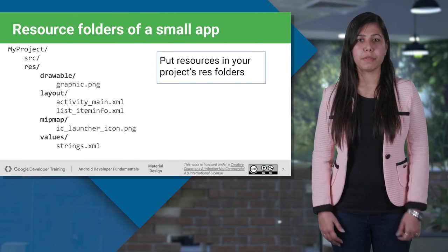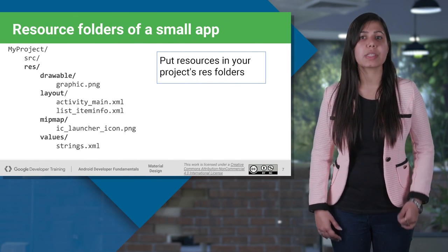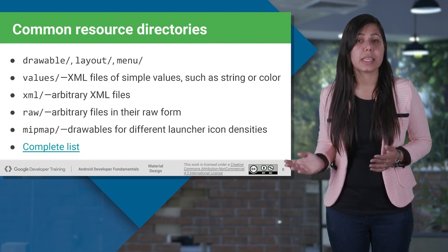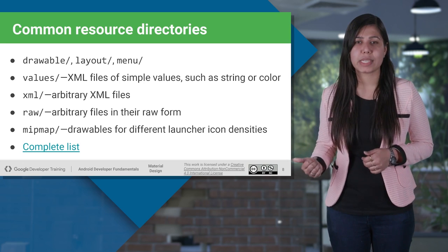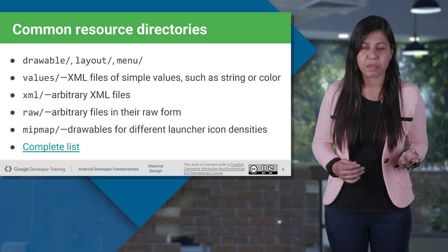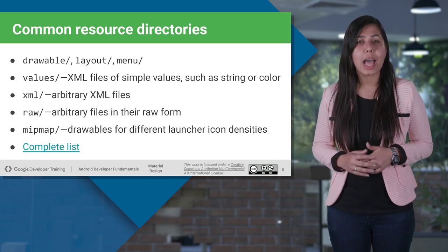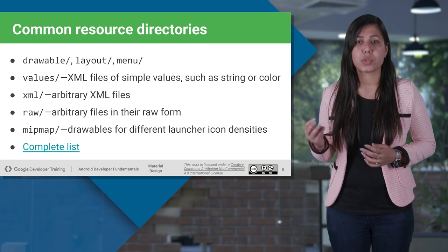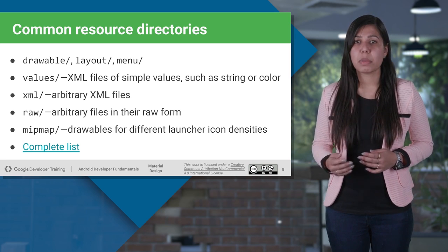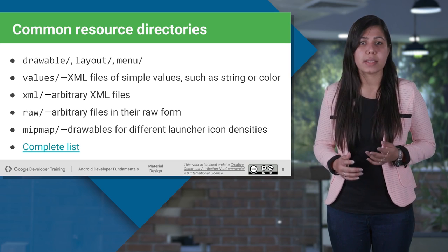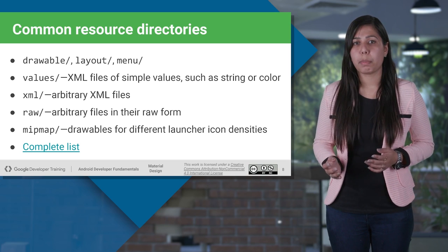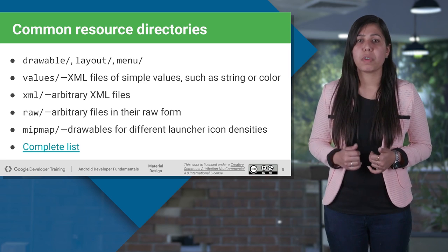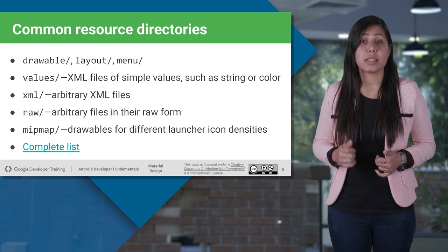As you already know, we place these alternative resources inside the resource folder. The common resource directories we can see are: drawable to define images, layout for defining XML files, menu for drawing menus and items, values which contain XML for defining strings, colors, or dimensions, XML for defining any arbitrary XML file to be read from the app, raw for including sounds and video files, and mip map for defining different density icons.